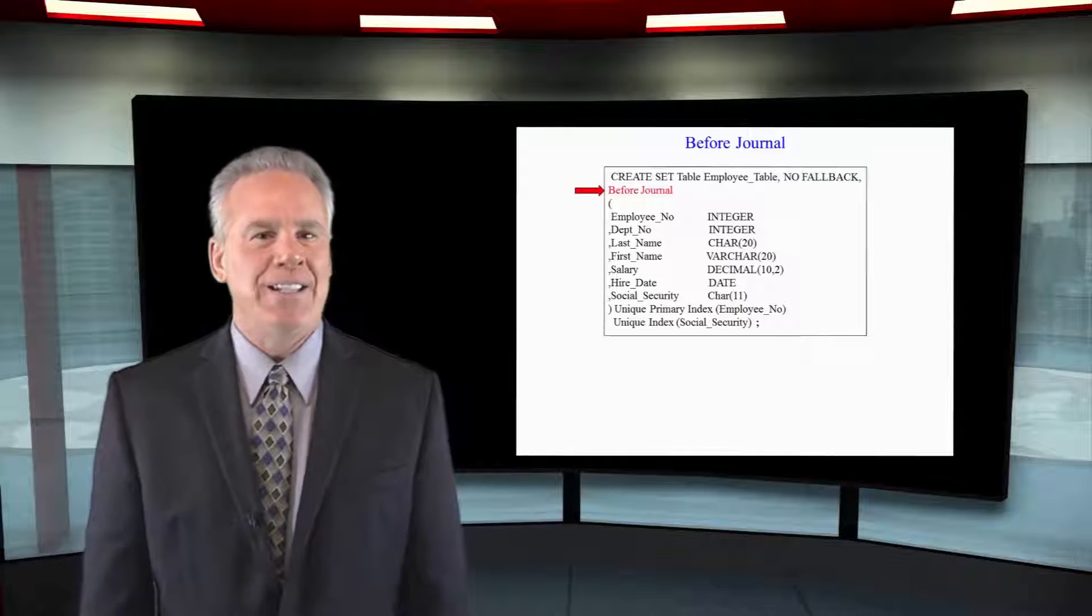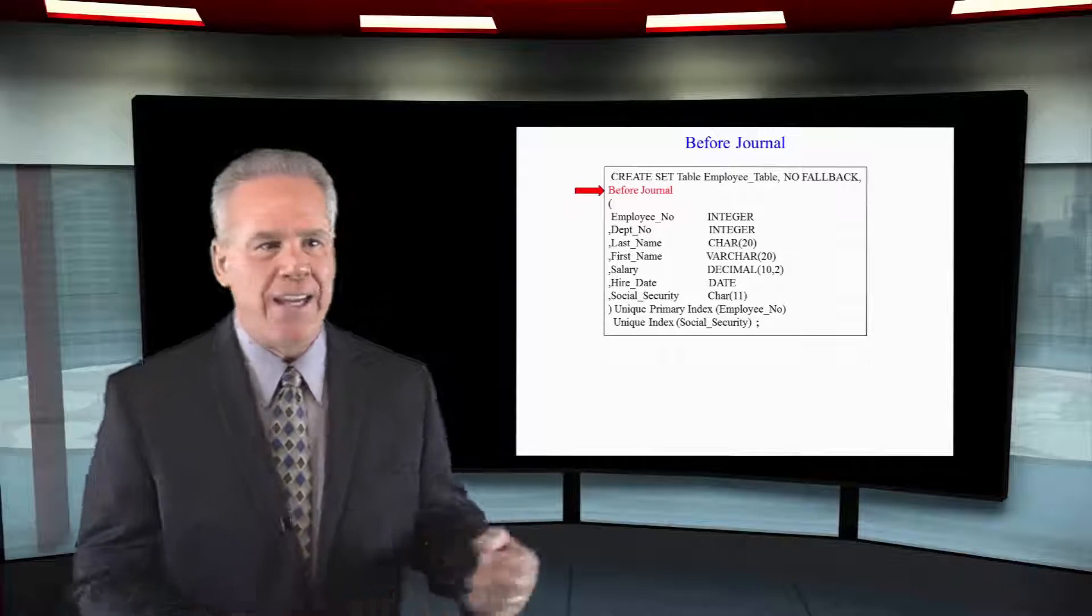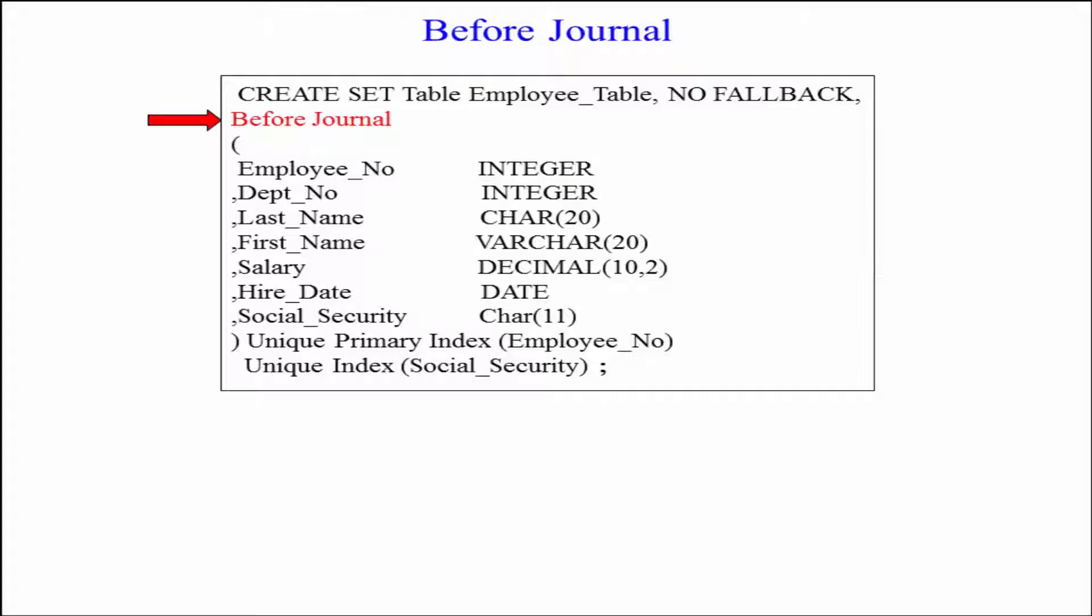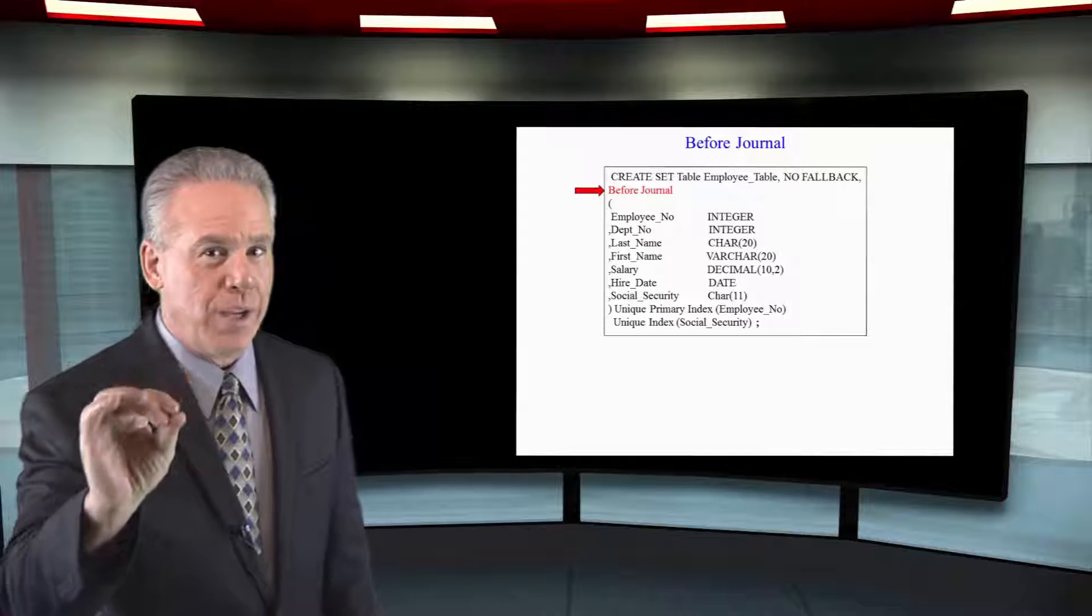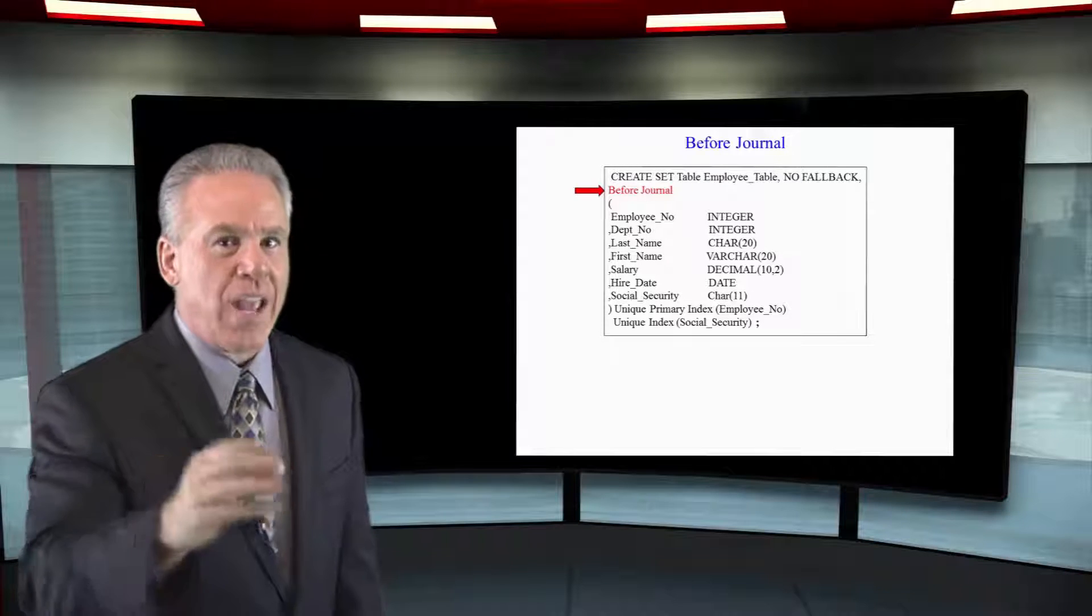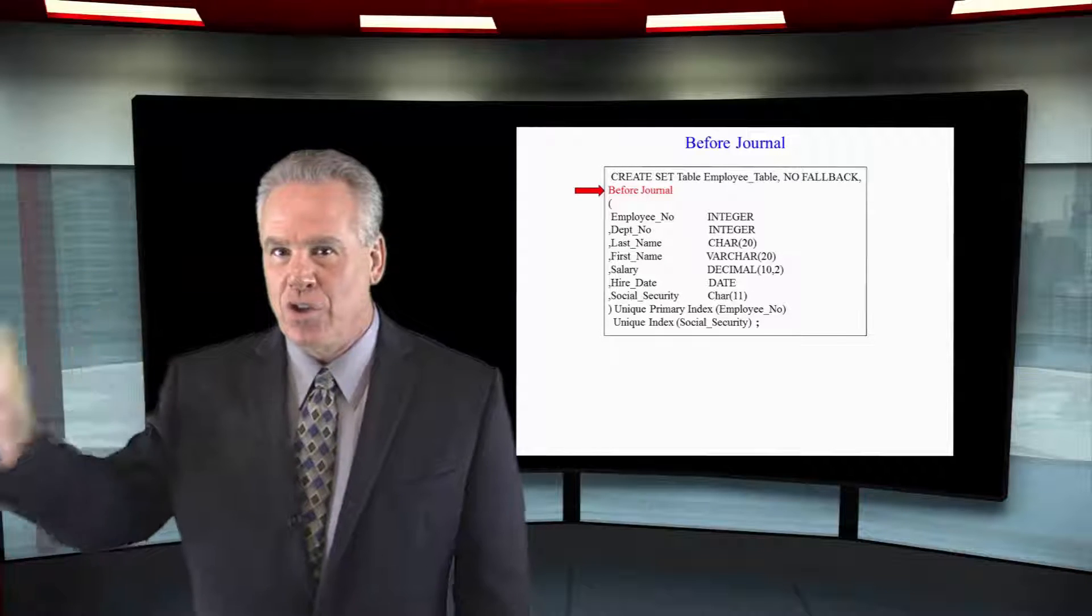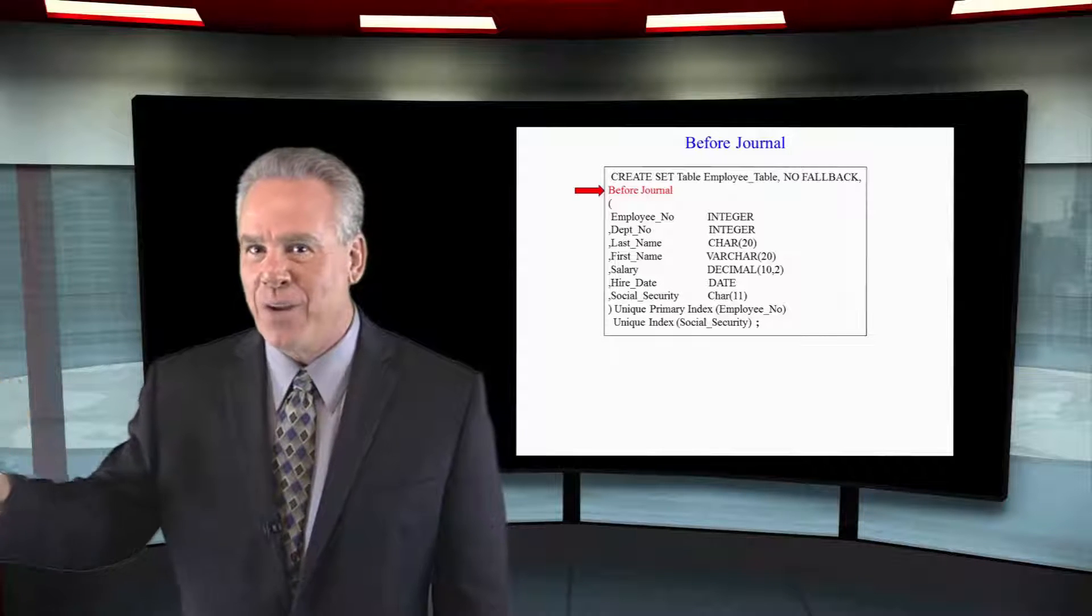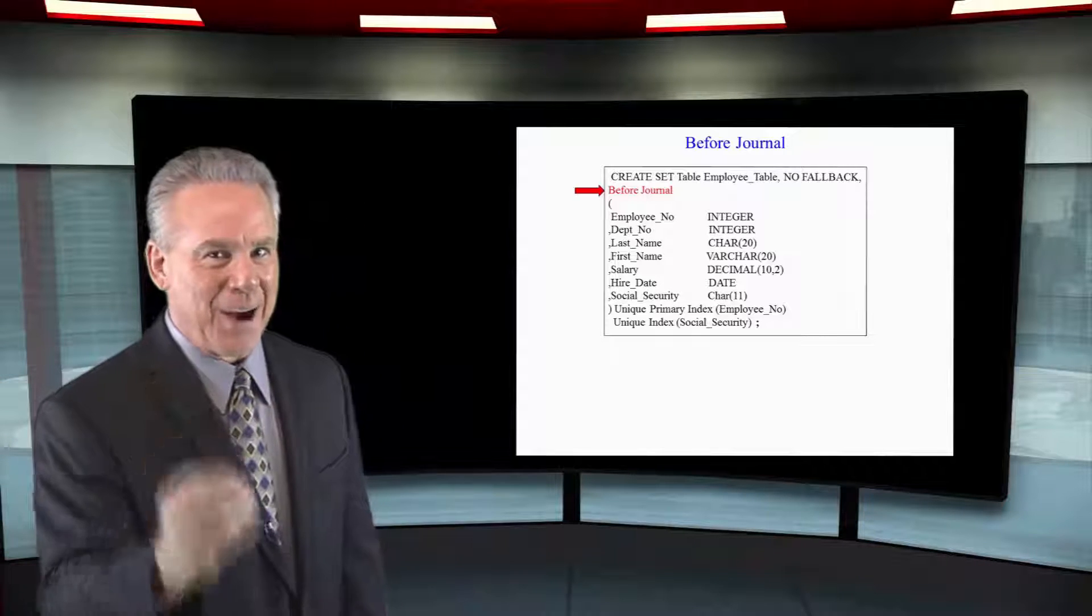Here I'm creating my table, but I'm also adding a before journal. What that says is, any time the rows change in any way, with an insert, an update, or a delete, you take a before picture of that row and you save it to the journal area so I can put it out to tape and have that transaction backed up.